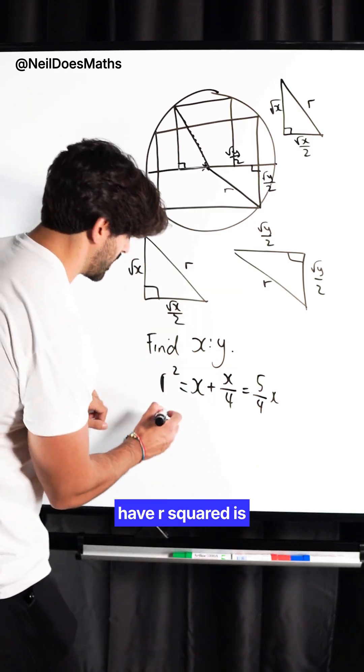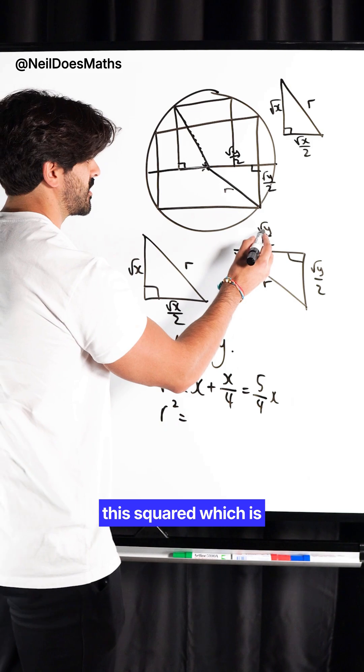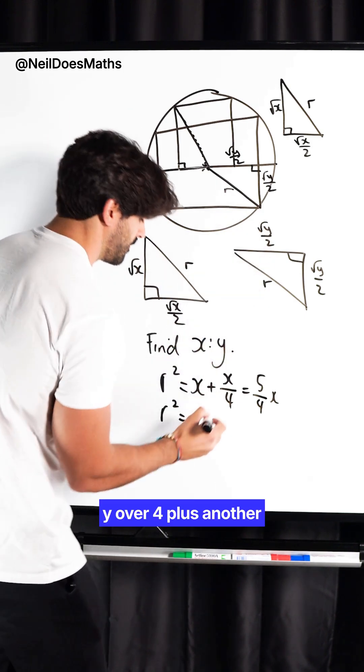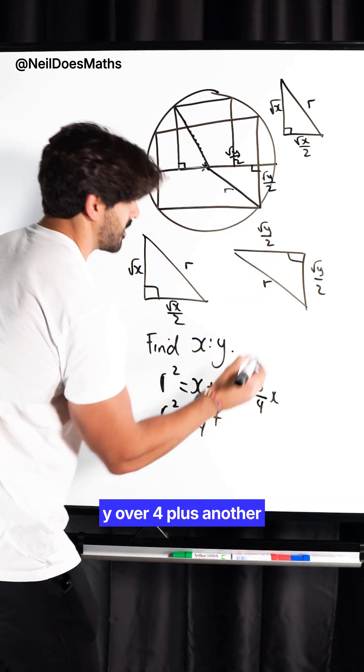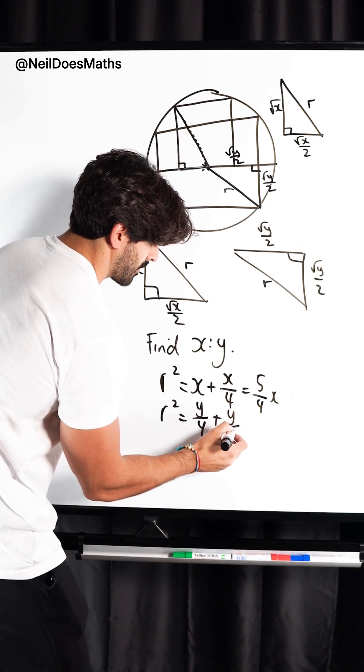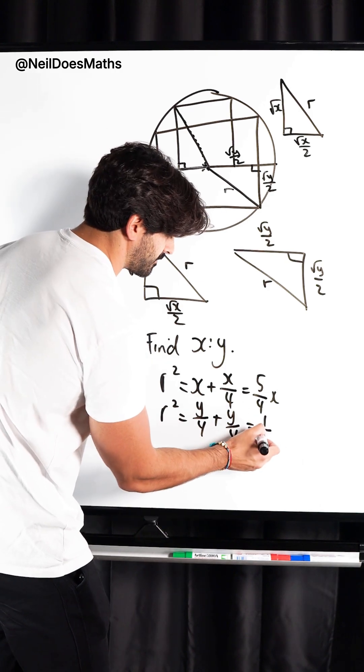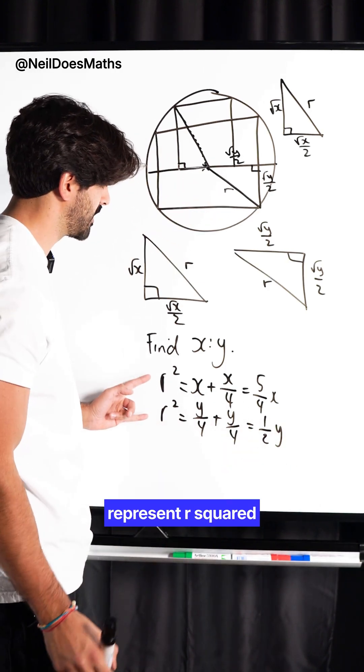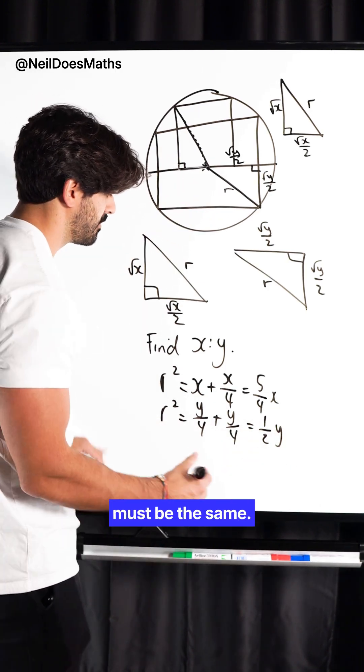And then, over here, we have R squared is this squared, which is Y over 4, plus another Y over 4. So, a quarter plus a quarter is a half. Now, since they both represent R squared, these two things must be the same.